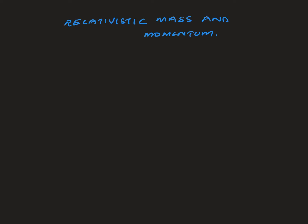In classical physics, if you have an object with mass m1 and velocity v1, we define momentum as m1 v1. This is at non-relativistic speeds — about one-tenth of the speed of light — and we can use the formula p equals m1 v1.